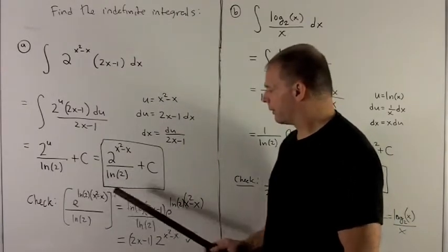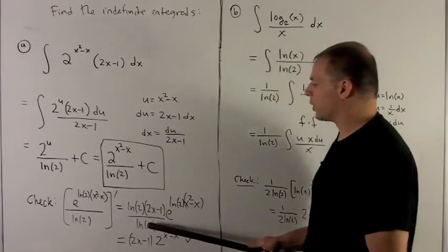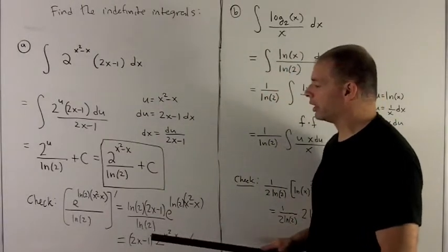We want to take the derivative of this. Well, first note, the natural log of 2 is a constant, so I don't worry about that at all. I just bring it over in the denominator.